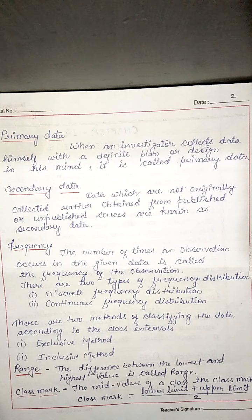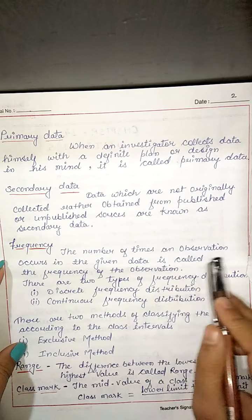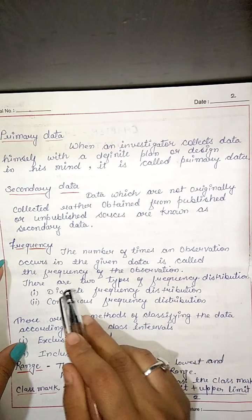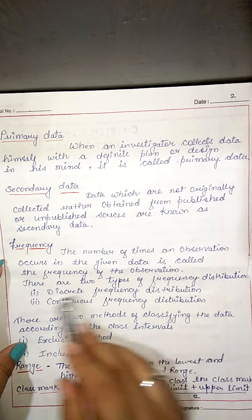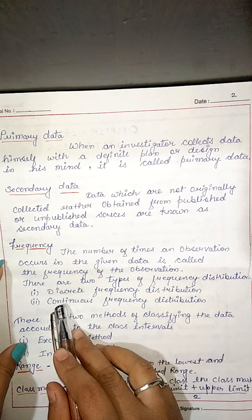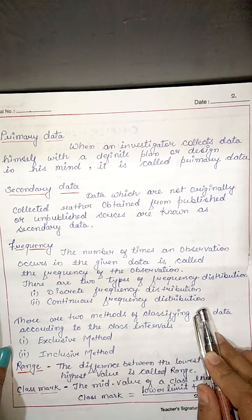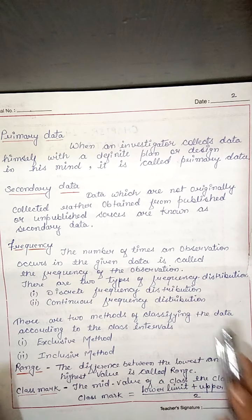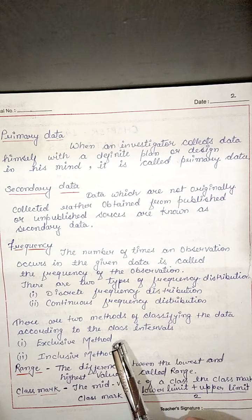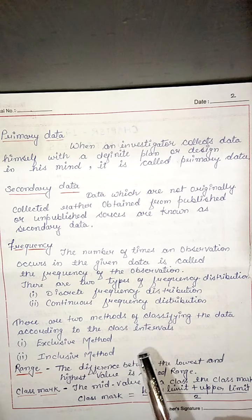Now, frequency — what is frequency? The number of times an observation occurs in the given data is called the frequency of the observation. There are two types of distribution: discrete frequency distribution and continuous frequency distribution. There are two methods of classifying the data according to class intervals: the inclusive method and the exclusive method.